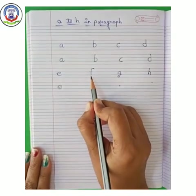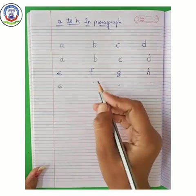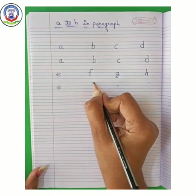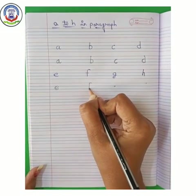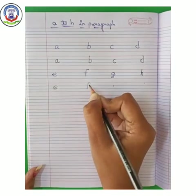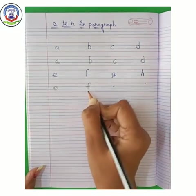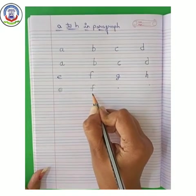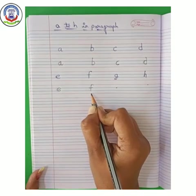Next letter — F. Start from red line. Make a small curve and standing line like this. Now, sleeping line on blue line. F. F says fur — Fish.